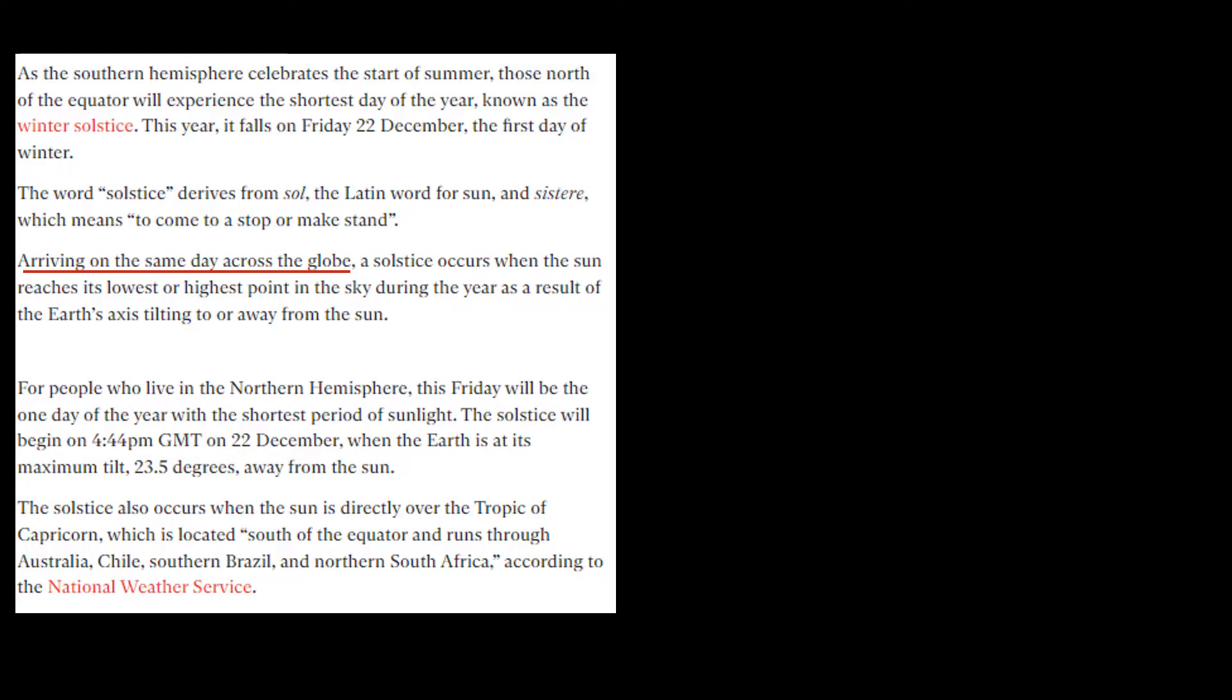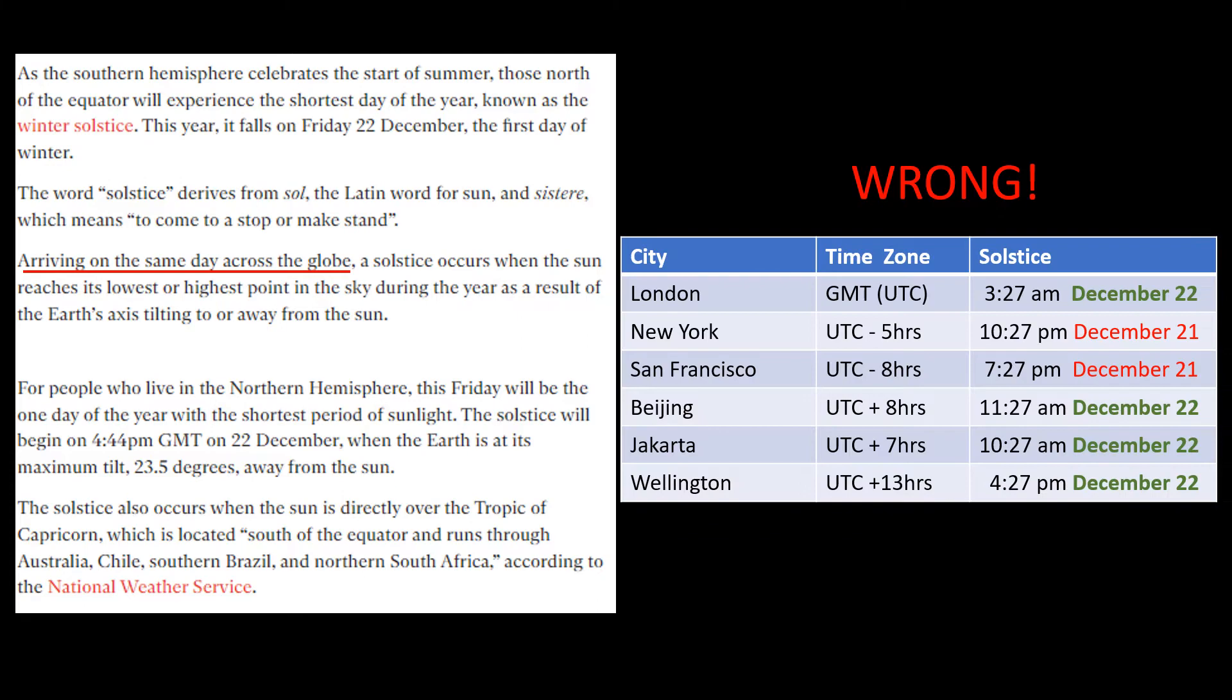The article says that the solstice arrives on the same day across the globe. That's quite simply wrong. The day and time the solstice arrives depends on your time zone. San Francisco, which is eight hours behind London, the solstice arrives a day earlier at 7:27 on December the 21st.